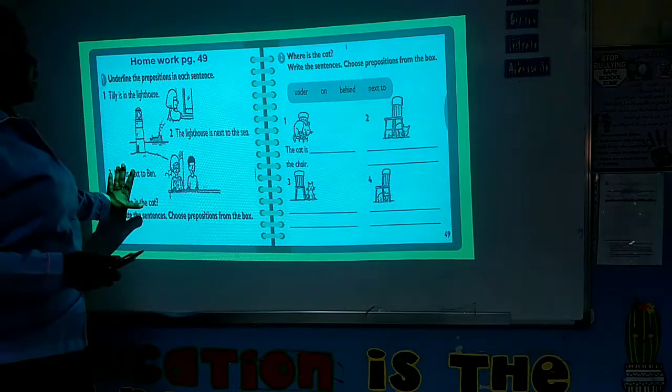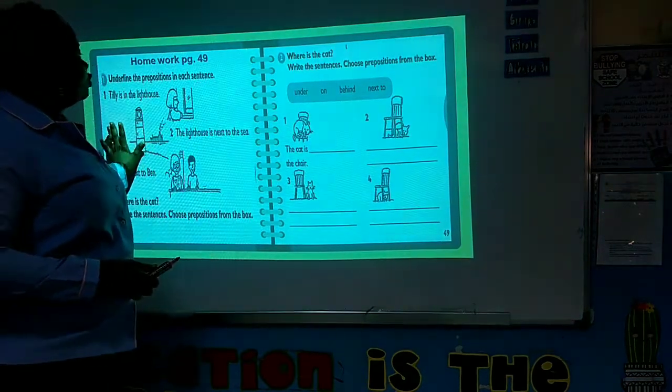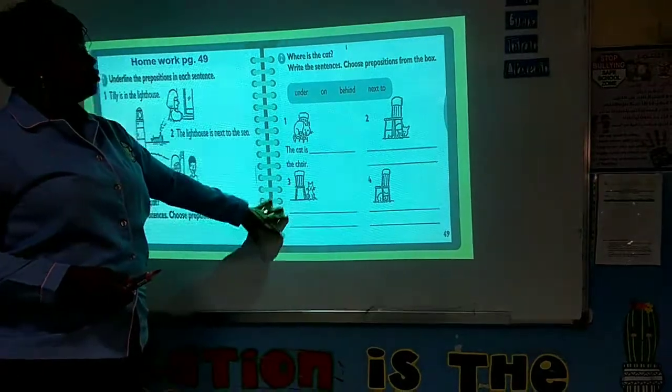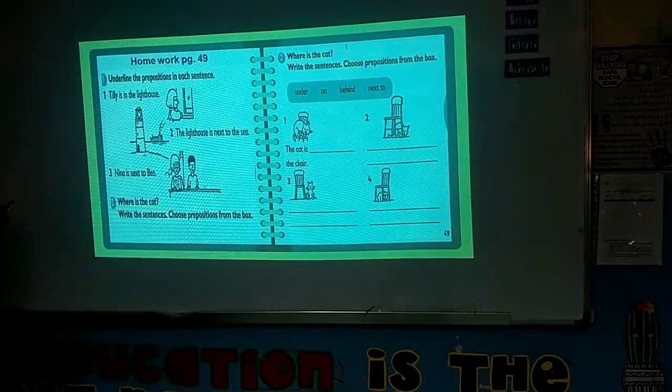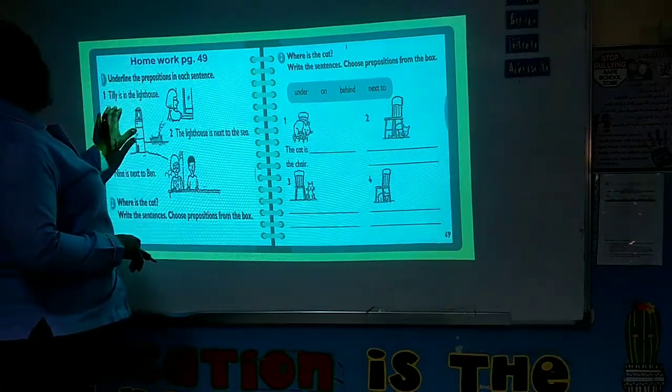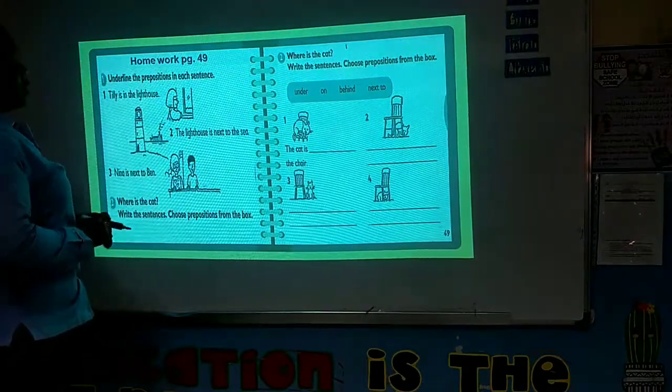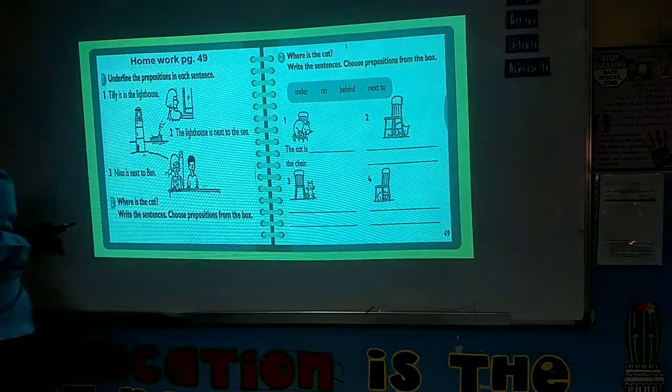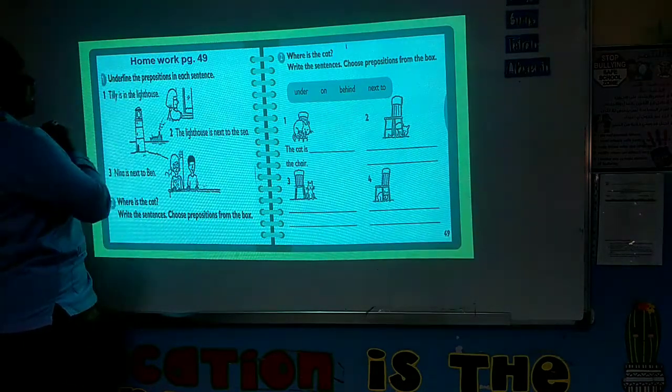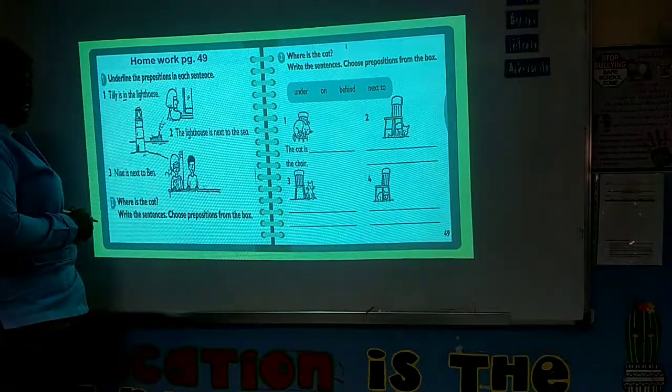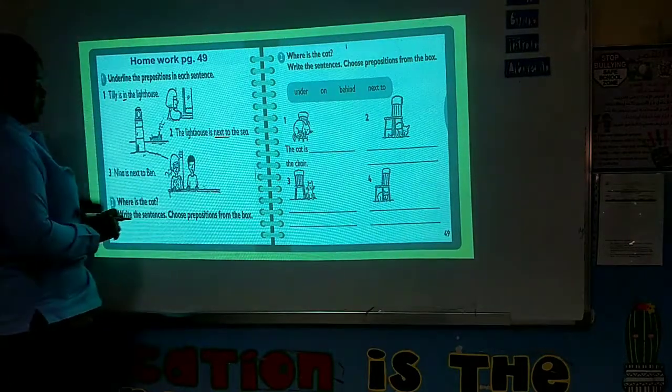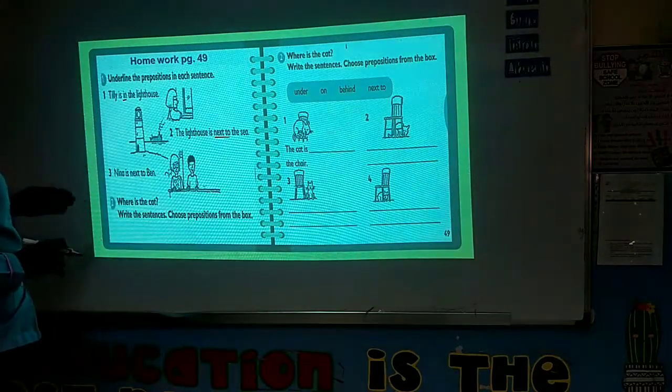Now, this is your homework. I will just do this for you, and then you'll learn through this one. Here, underline the preposition in each sentence. Tinny is in the lighthouse. Where is the preposition here? The preposition here is in. You underline in. The lighthouse is next to the sea. Next to. Ninny is next to Ben.